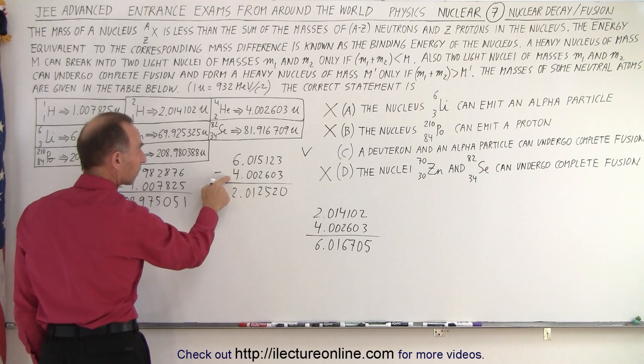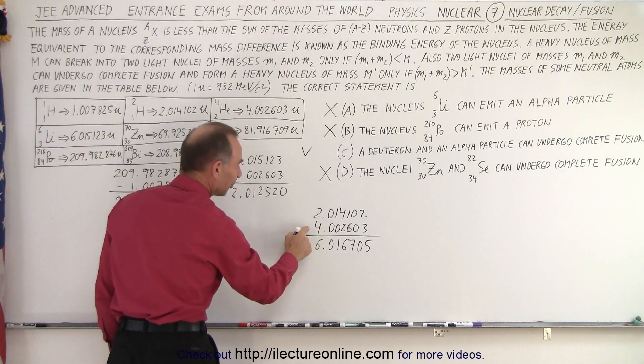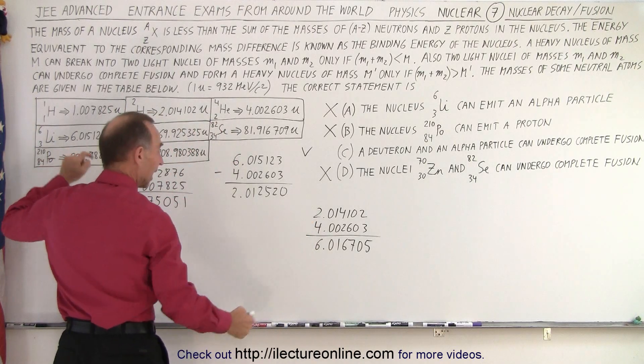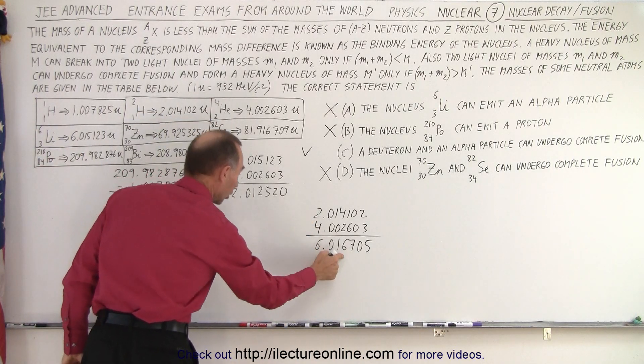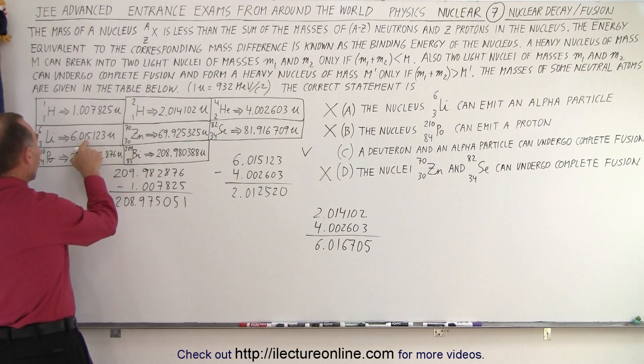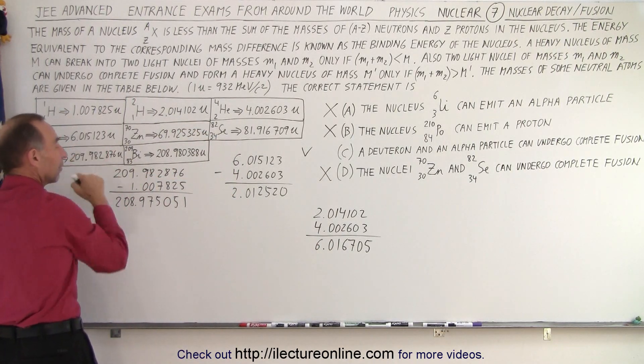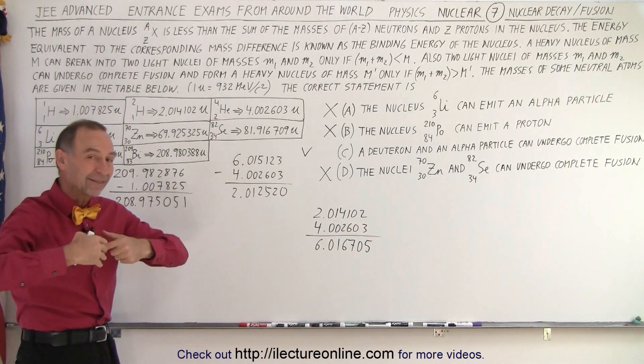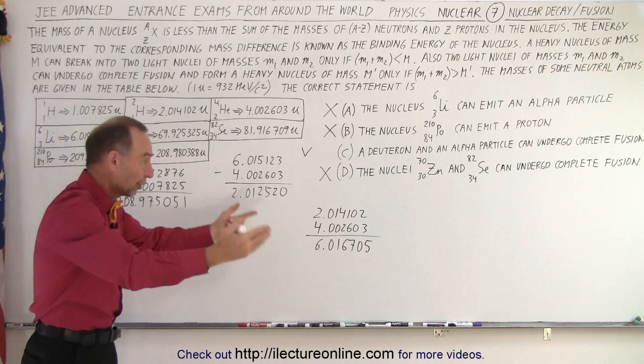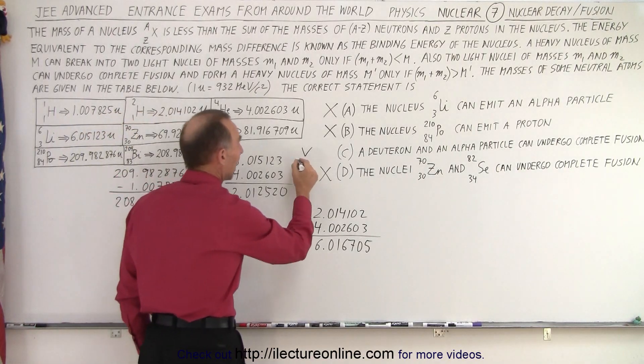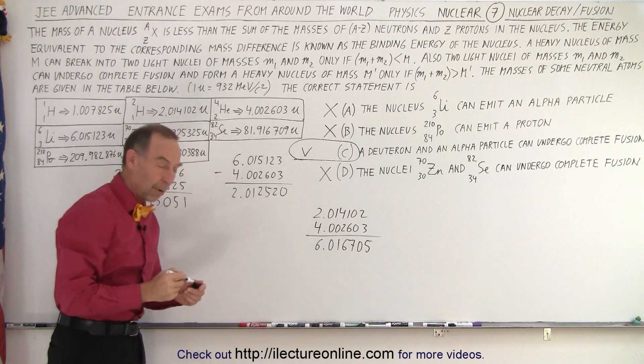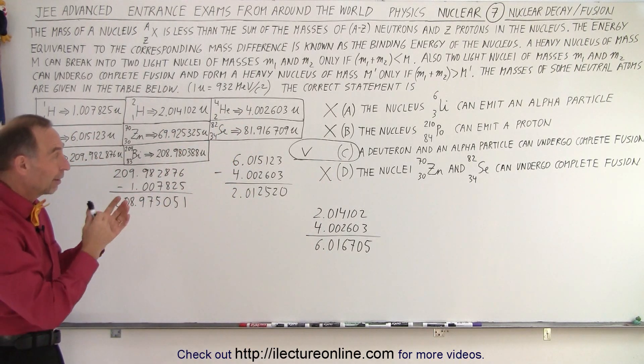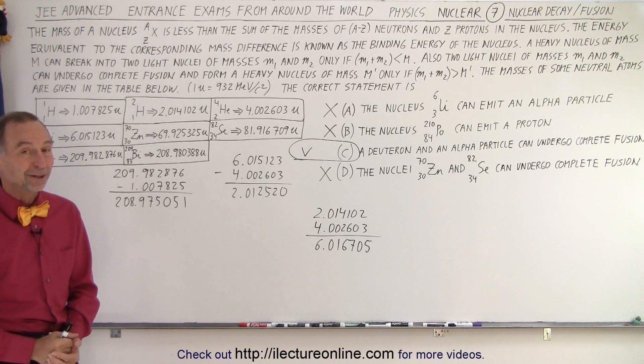And notice that this is larger than the mass of lithium-3-6. Therefore, the two initial products have more mass than the end product. The remaining mass, that's called the mass defect, is then converted to energy. And so therefore, we have shown that this is definitely a possible nuclear reaction. And in this case, the only one of the four that are listed. And that is how it's done.